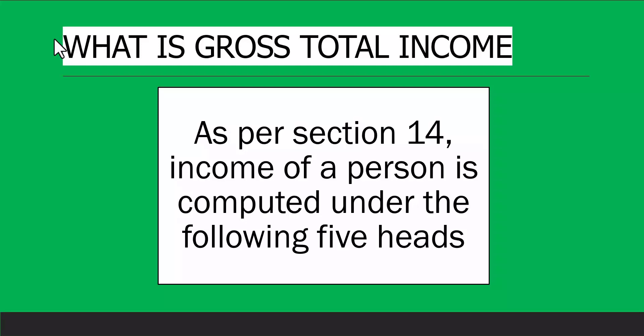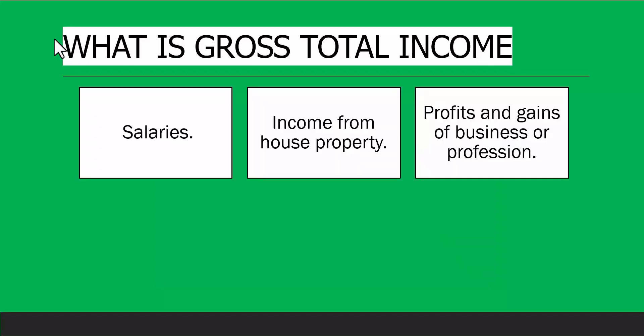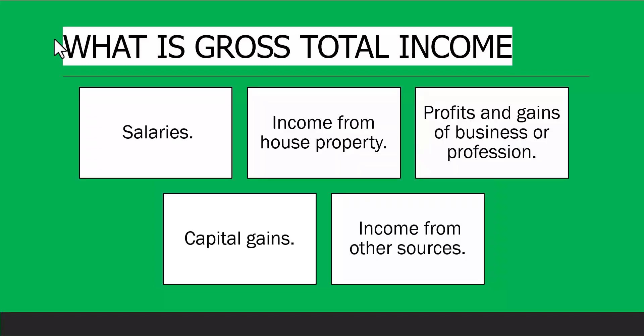What is gross total income? As per Section 14, income of a person is computed under five heads of income: salaries, income from house property, profits and gains of business or profession, capital gains, and income from other sources. These are the five heads under which you have to calculate the income of a person.